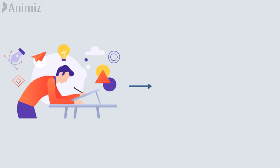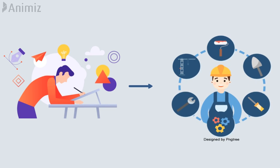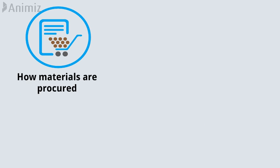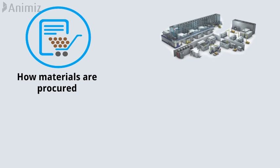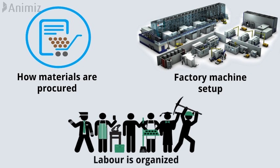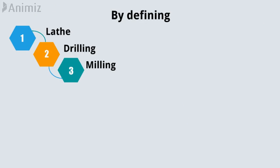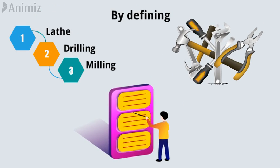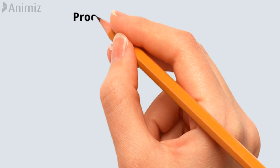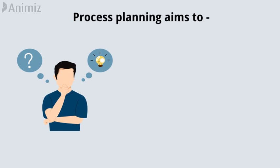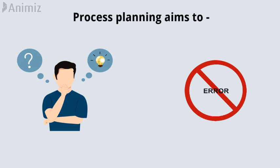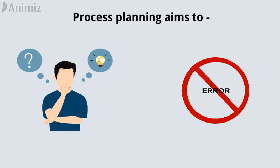Process planning transforms a product design into a set of actionable steps, determining how materials are procured, how machines are set up, and how labor is organized. By defining the sequence of operations, tools required, and work instructions, process planning aims to eliminate uncertainty and reduce the chances of errors or inconsistencies.